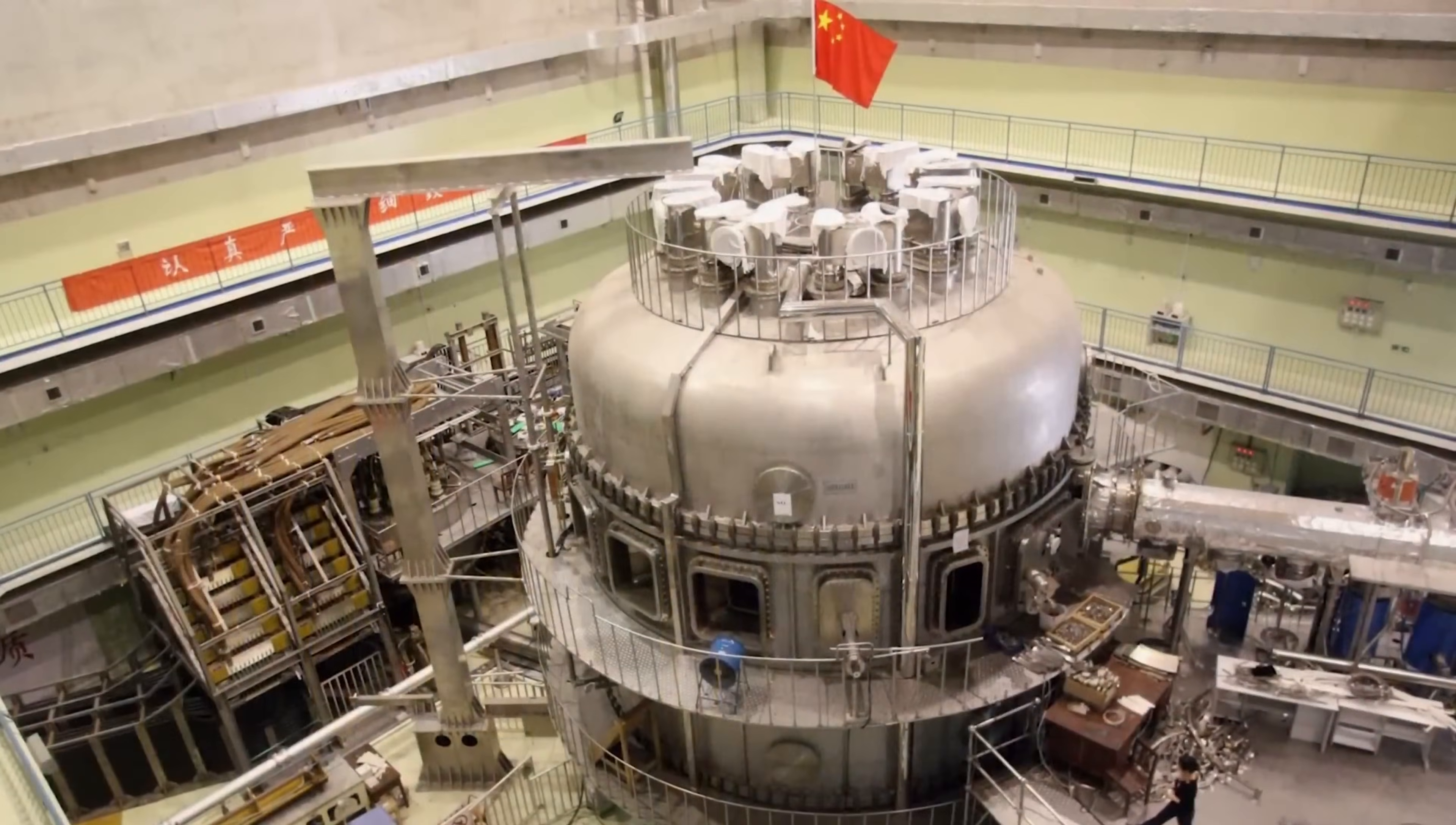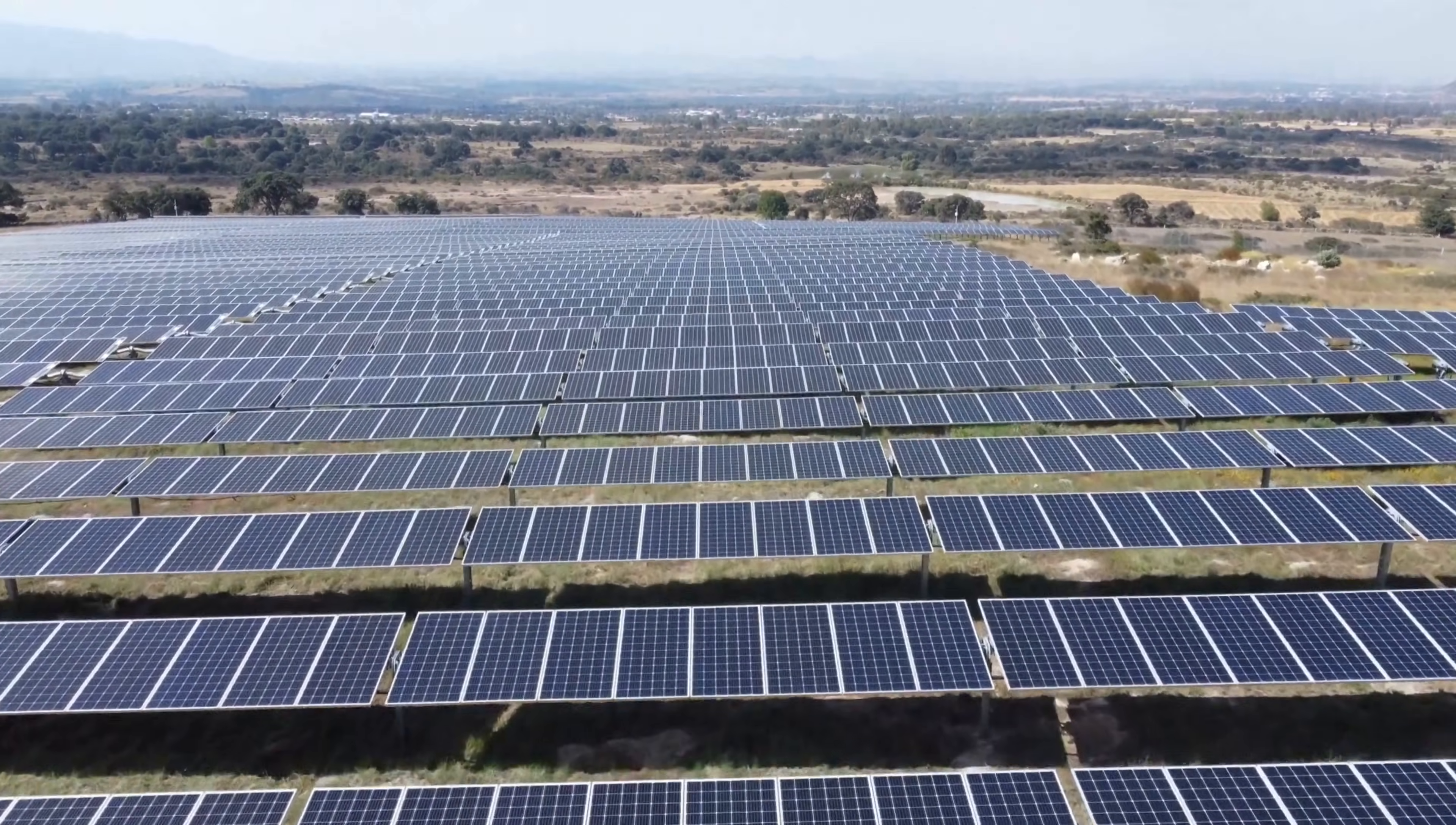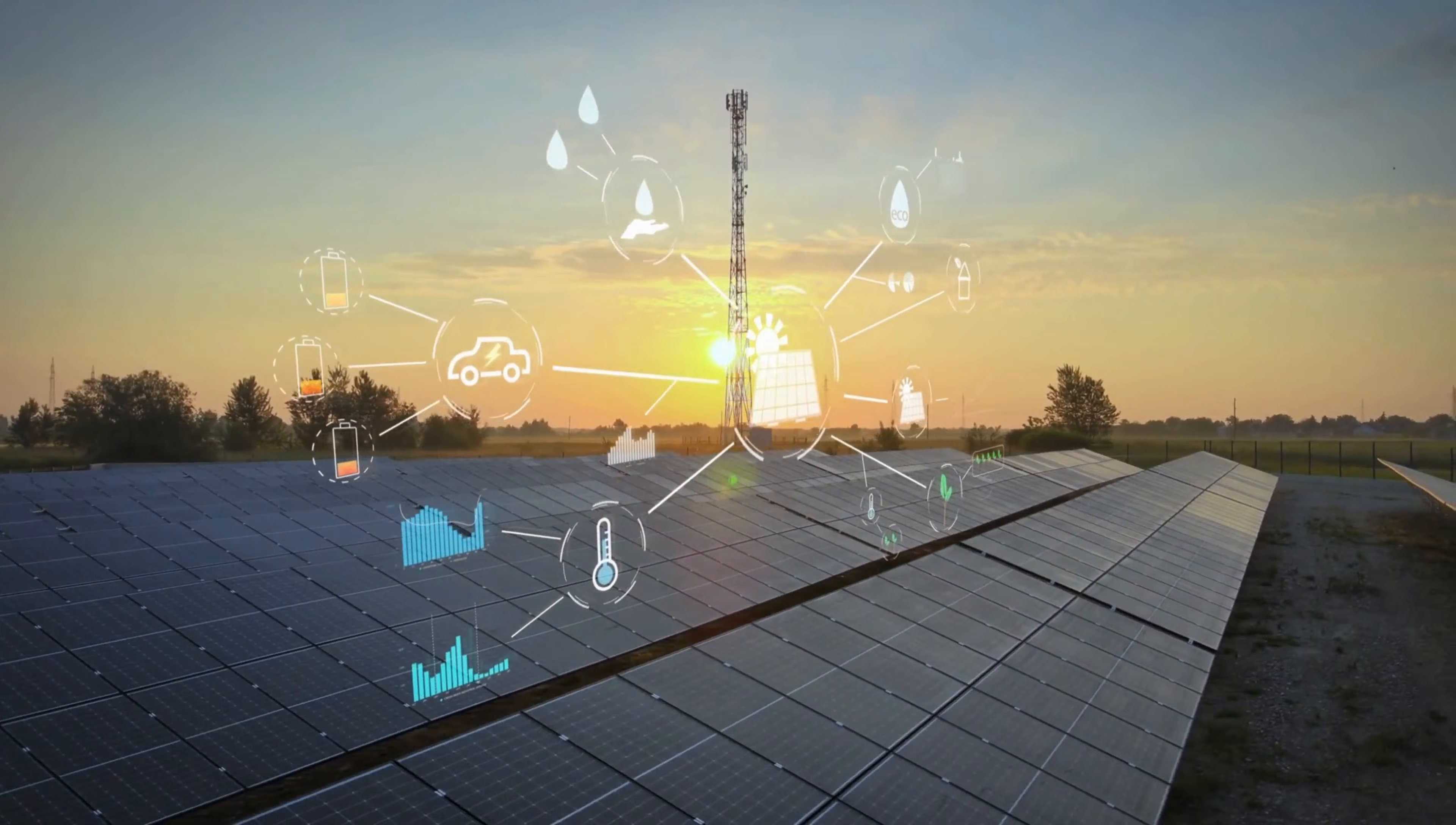All running on batteries deployed at a scale that rewrites economics. They're building nuclear reactors faster than anyone else can plan them. The East reactor has sustained plasma at 200 million degrees Fahrenheit for over 17 minutes. That's three times longer than any other fusion project on Earth. Solar panels? 80% of the world's supply. Wind turbines? 60% global market share.